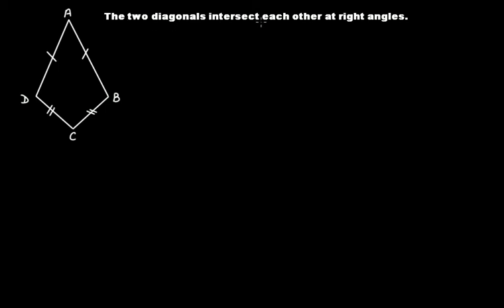The two diagonals intersect each other at right angles. Let's draw the two diagonals — the shorter one, DB — and you have to prove that these two diagonals intersect at right angles. For that, what you have to do is...